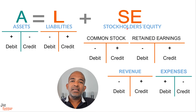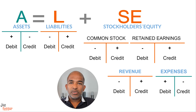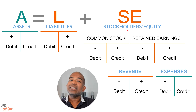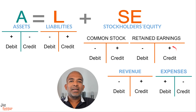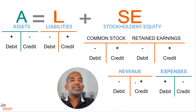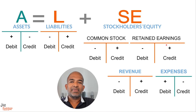For liabilities and stockholders' equity, the rules are reversed - debits decrease these accounts while credits increase them. For instance, if a company takes out a loan, that's an increase in liabilities, so we credit the liability account. If they pay off some debt, that's a decrease in liabilities, so we debit the liability account. Stockholders' equity is calculated from revenue minus expenses. When a company earns revenue, that increases equity, so we credit the equity account. When a company incurs expenses, that decreases equity, so we debit the equity account. By following these rules, every transaction is recorded accurately and the balance sheet equation remains always in balance.